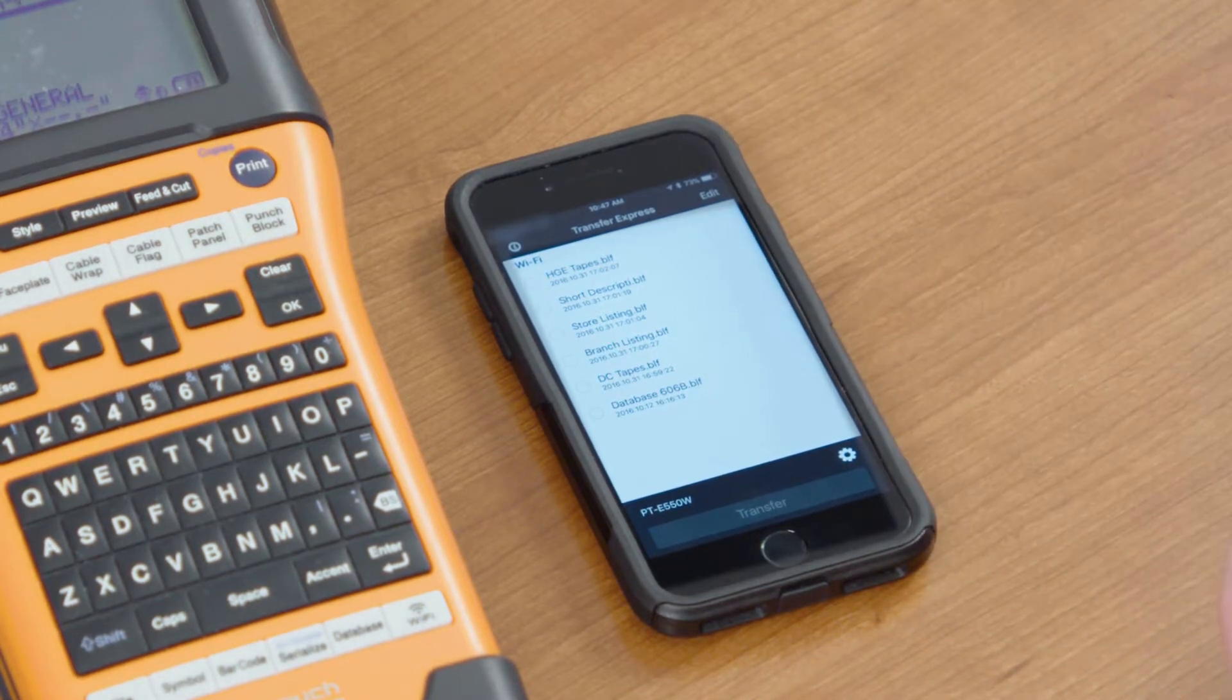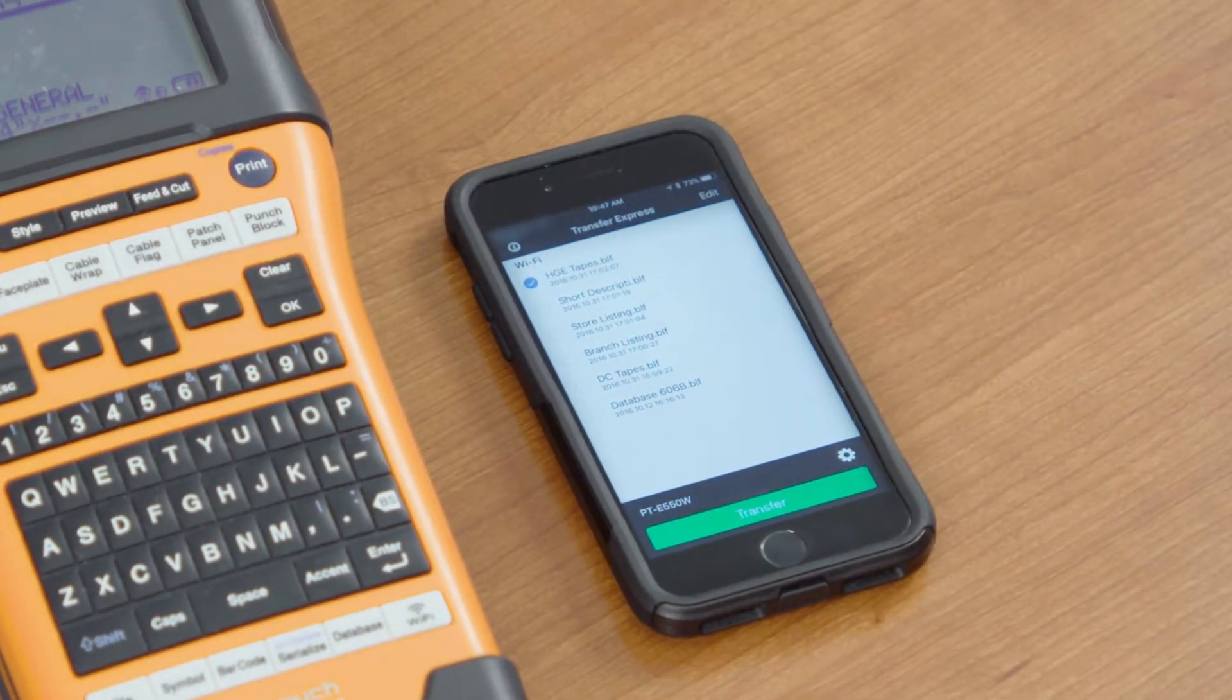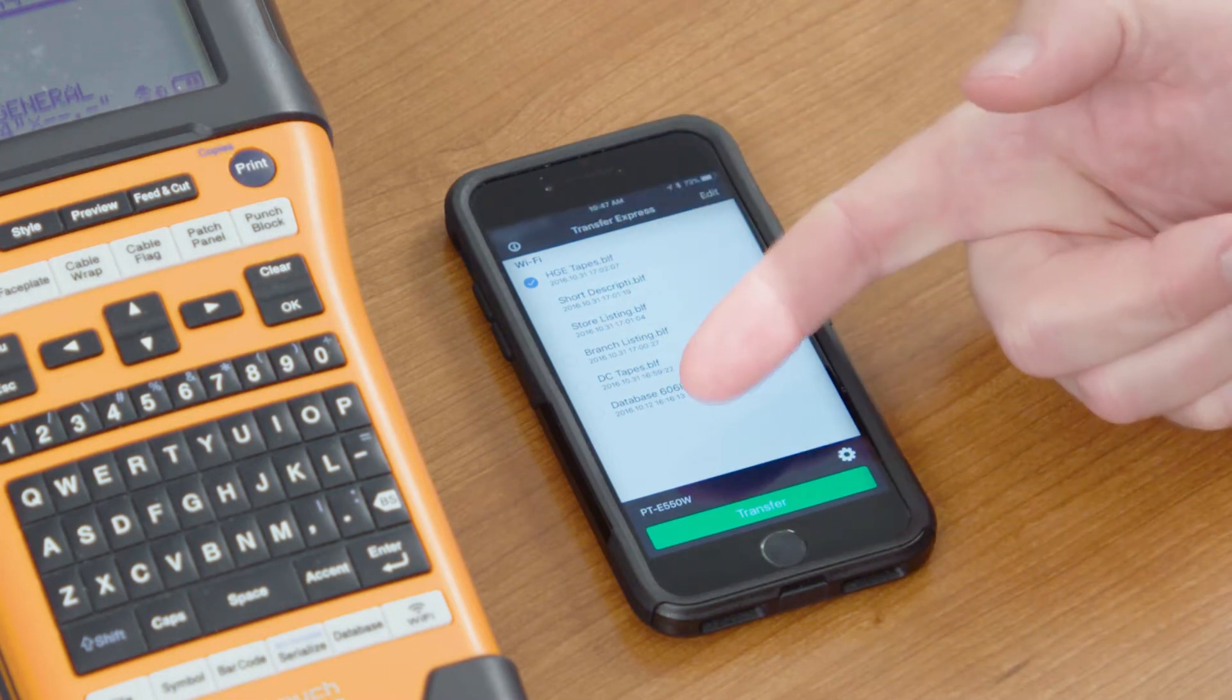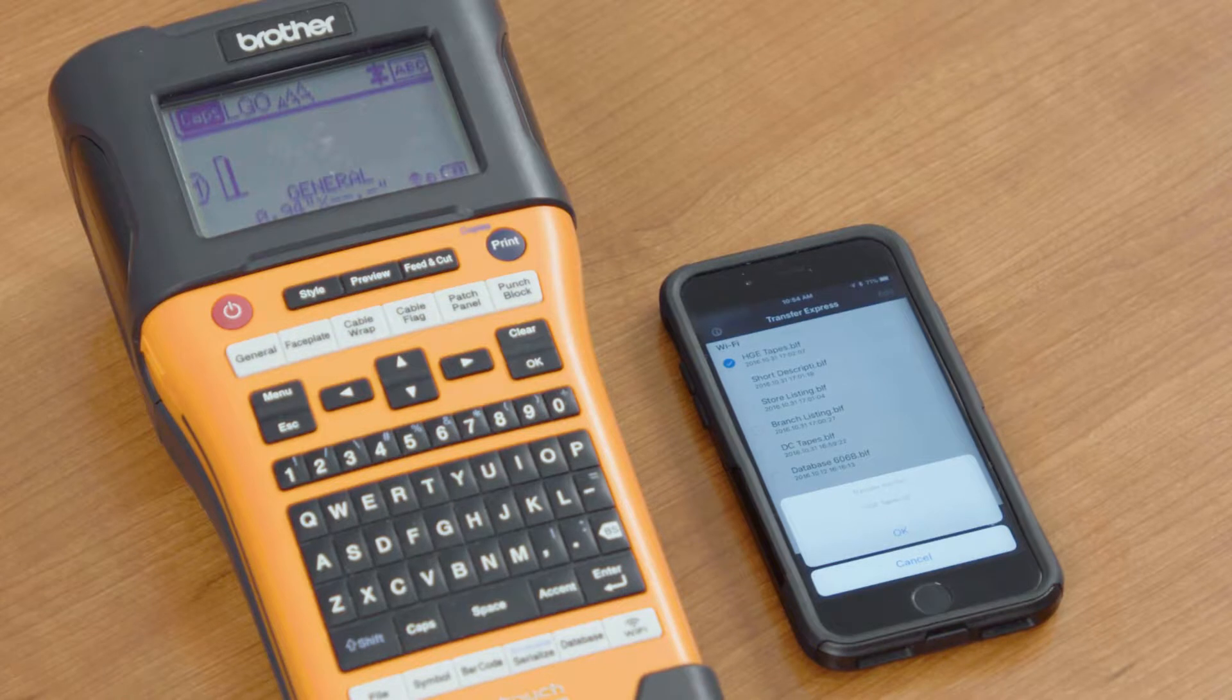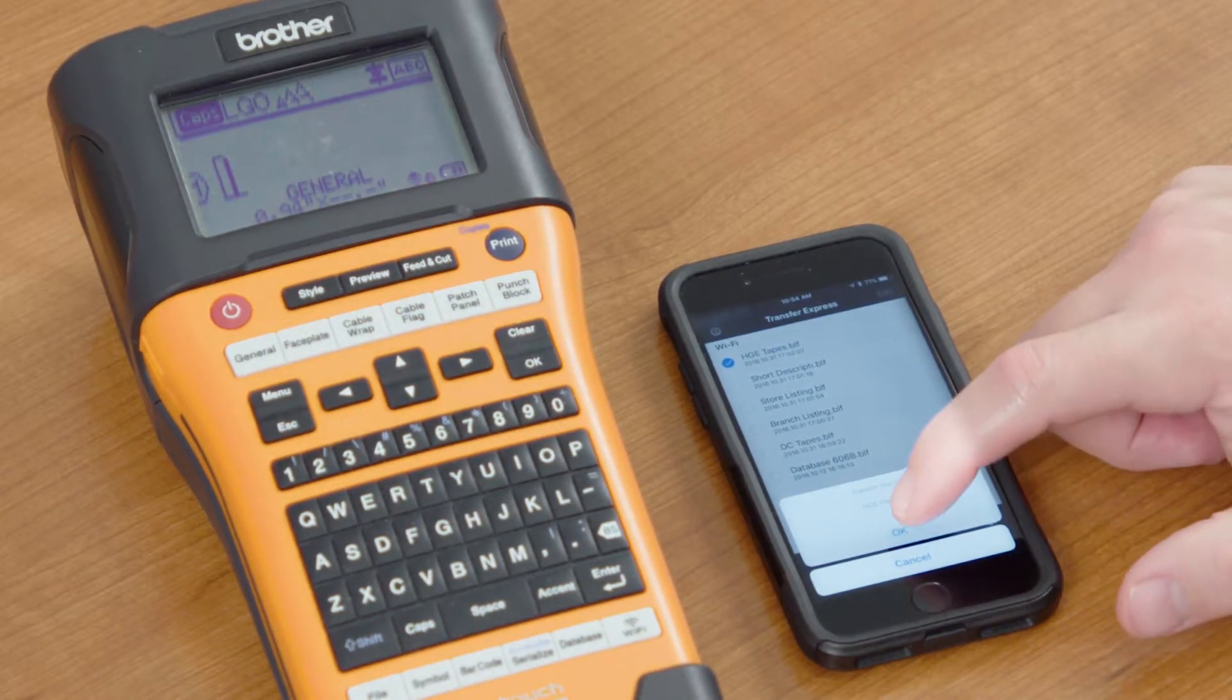Once the printer is selected, then just select which database you want to send over to the machine. You can do that by clicking the one that you want or tapping the one that you want, highlighting that spreadsheet, selecting that Transfer Express app, and select OK.